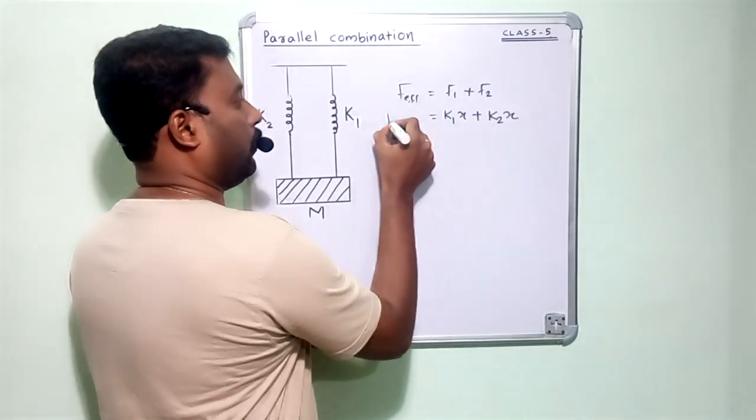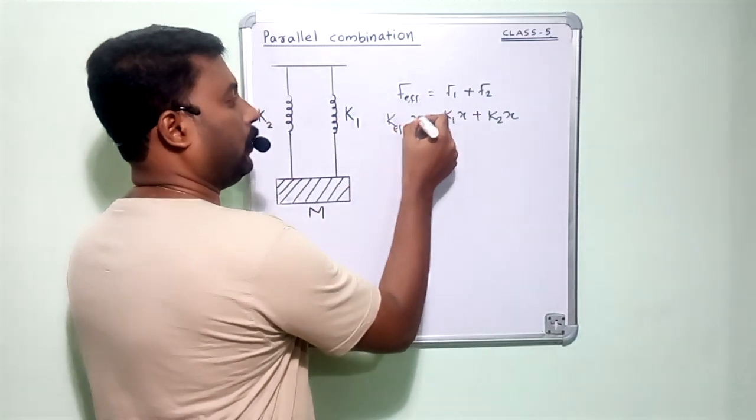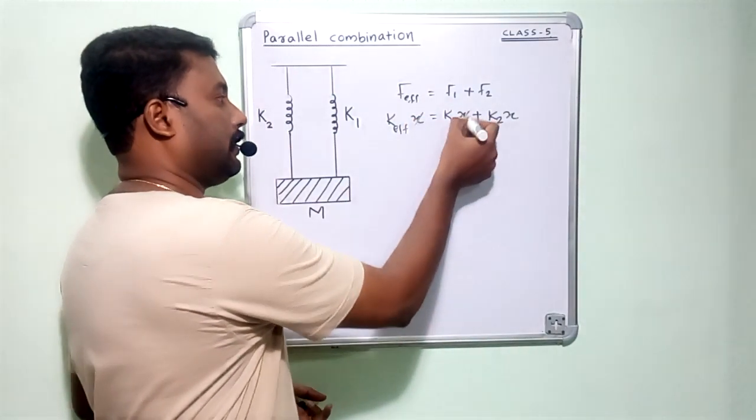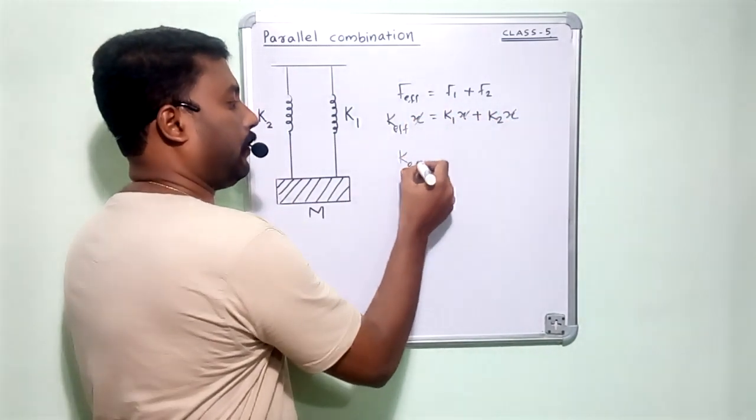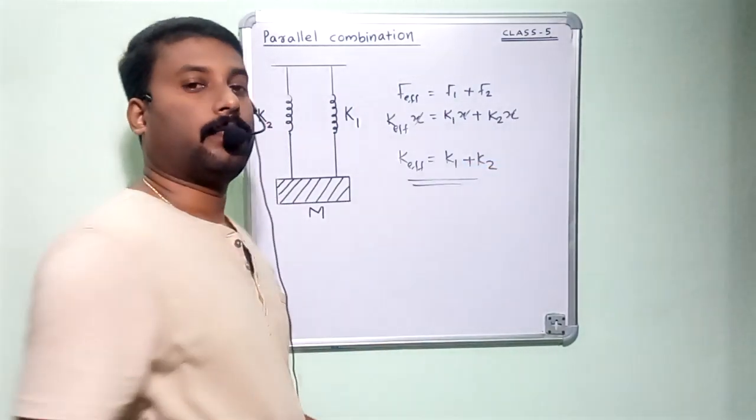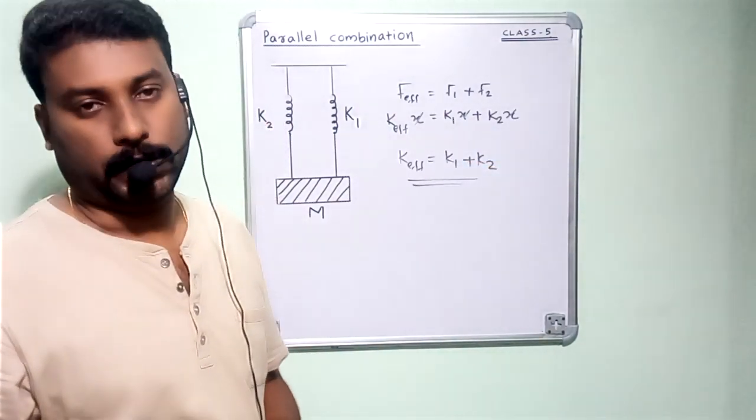The net force equals K effective into x. In this parallel combination, elongation is same everywhere. So x gets cancelled and K effective equals the sum of these two spring constants. K effective equals K1 plus K2.